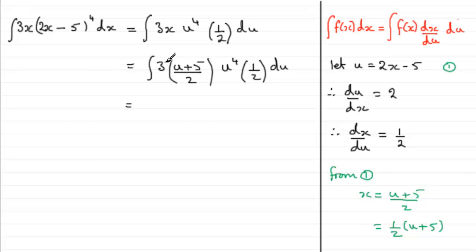What we want to do now is just tidy this up. We've got the constant 3 over 2 times 2, which is 4. We can drag this out the front of the integral, and it becomes 3 quarters, the integral of. Then we've got u to the power 4 multiplied by u plus 5. We can expand this now. We can get that this is u to the power 5 plus 5u to the power 4.